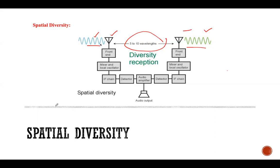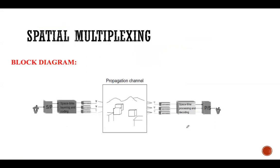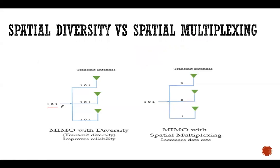Now, what is spatial multiplexing? In spatial multiplexing, we do not send the same copy of the signal multiple times. For example, if we have data 101, in spatial diversity the same data is sent again and again — multiple copies of the same data. But in spatial multiplexing we do not do the same.